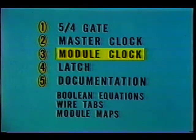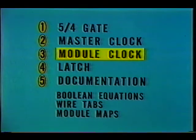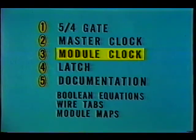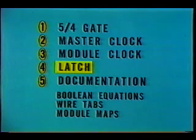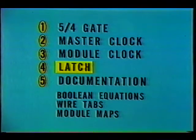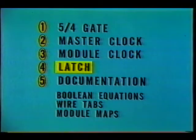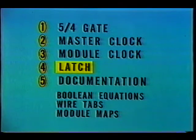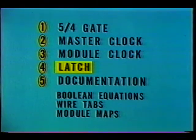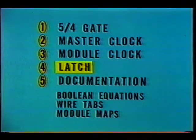Unit 3 describes the module clock and its use as timing for all storage elements or circuits. Unit 4 describes the operation of a latch. It is one of the primary storage elements in the Cray 1 and will help to demonstrate the use of the module clock. A knowledge of this circuit will also be necessary for all subsequent courses.